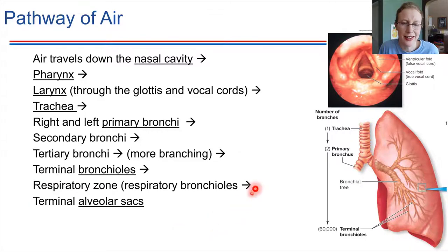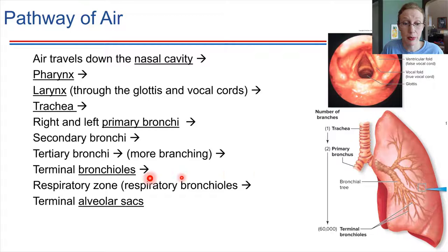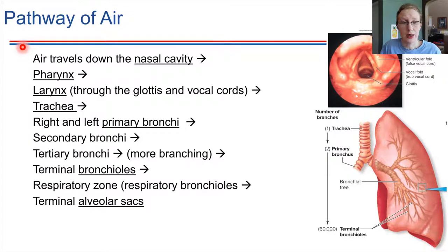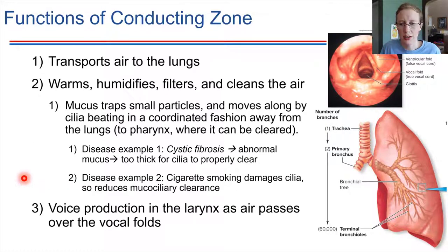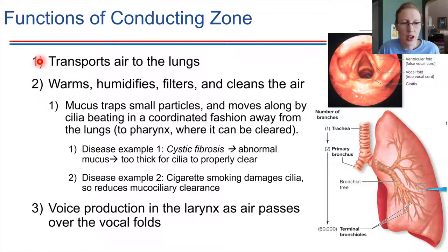It seems like the alveoli are the important area — that's where gas exchange takes place — which might raise the question: what's the point of all this other stuff? Does the conduction zone have a purpose other than just getting gas to where it needs to go? It does. The conduction zone does a few key things. For one, it transports the air, which is obviously very important. But it also helps get the air ready for optimal gas exchange by warming the air as it comes into the body, humidifying it, and filtering it.